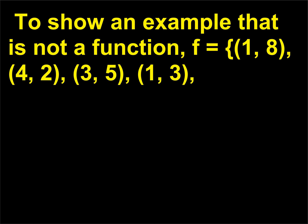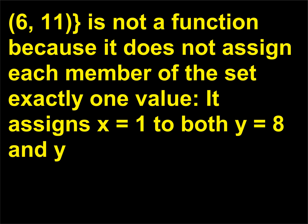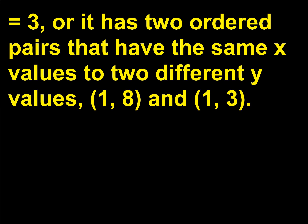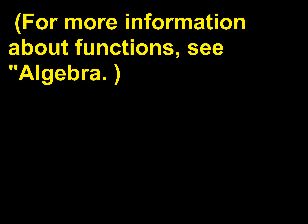To show an example that is not a function: f = {(1,8), (4,2), (3,5), (1,3), (6,11)} is not a function because it does not assign each member of the set exactly one value. It assigns x=1 to both y=8 and y=3, meaning it has two ordered pairs with the same x value but two different y values: (1,8) and (1,3). For more information about functions, see Algebra.